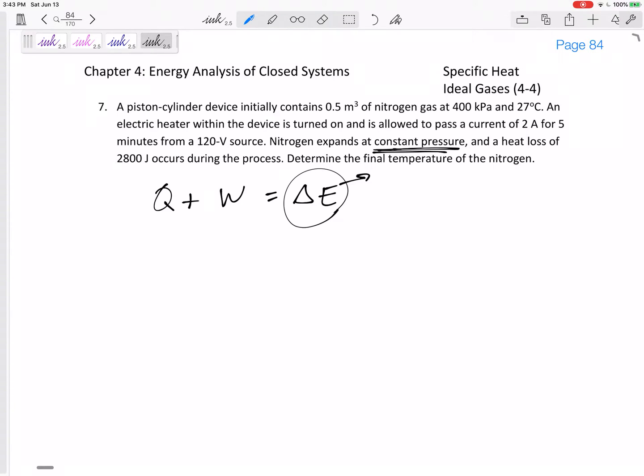Should this change in energy be delta U or delta H? It expands at constant pressure, so this should be delta H. There's no change in kinetic energy, there's no change in potential energy. The right hand side of our equation should be delta H, and delta H I'm going to say is m·cp·delta T because we're using specific heats.